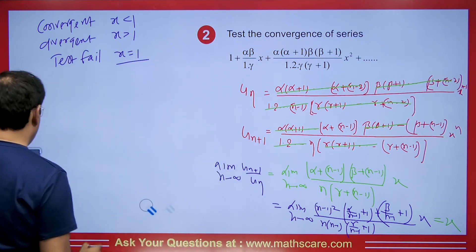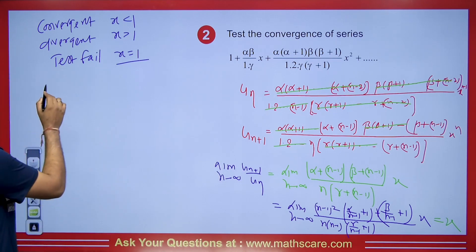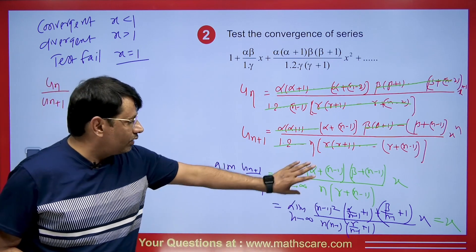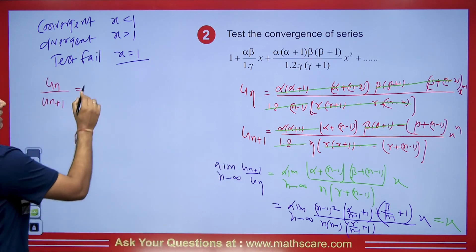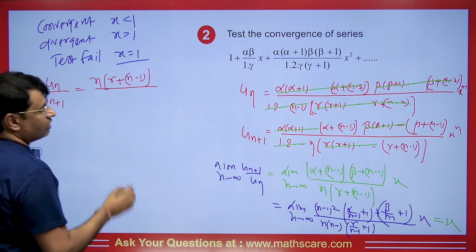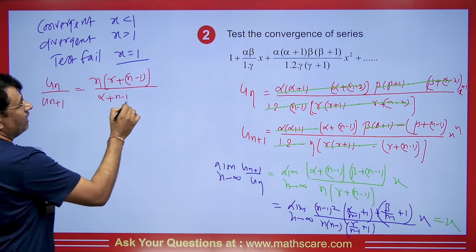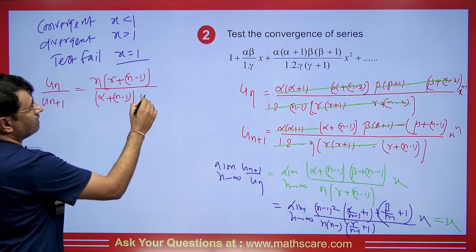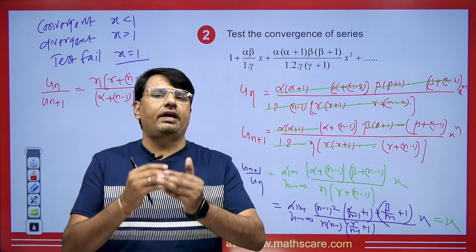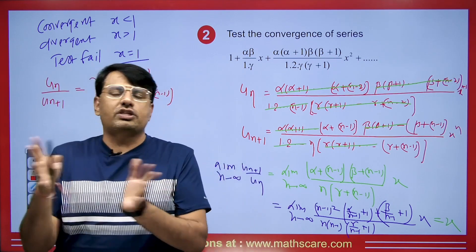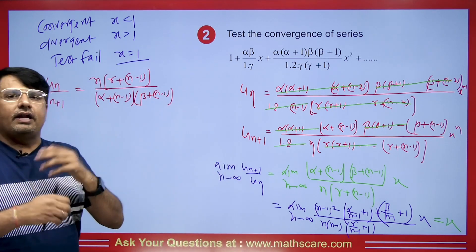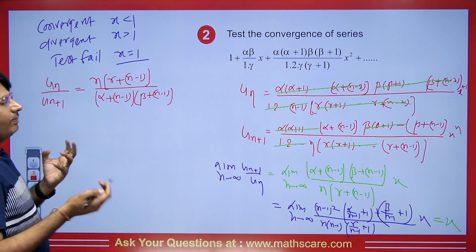For the Gauss test we compute u_n/u_{n+1}. Taking the reciprocal, the numerator becomes n(γ+n−1) and the denominator becomes (α+n−1)(β+n−1). Since all terms are in the form n−1, we substitute n+1 for n throughout to simplify, replacing n−1 with n and n with n+1. This makes the expansion easier.